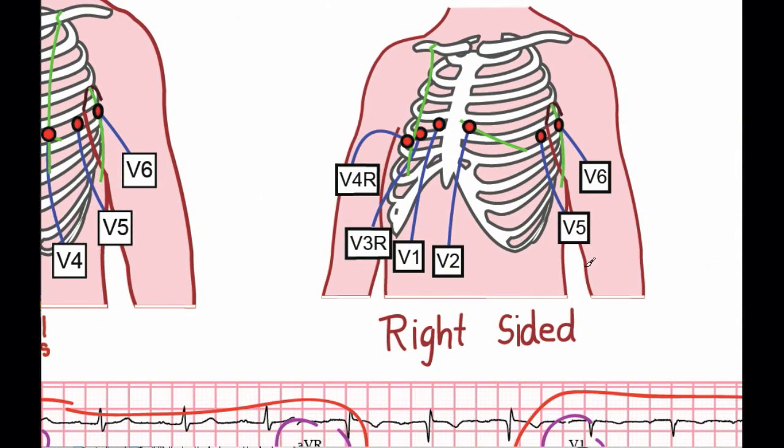Right-sided electrodes would go in the corresponding position that V3 through V6 do, except on the right side, instead of the left. This is useful in diagnosing myocardial infarctions on the right side of the heart. V1 goes in the exact same place as you had before, and so does V2. V3 is placed in the same spot you had on the left, but this time on the right.